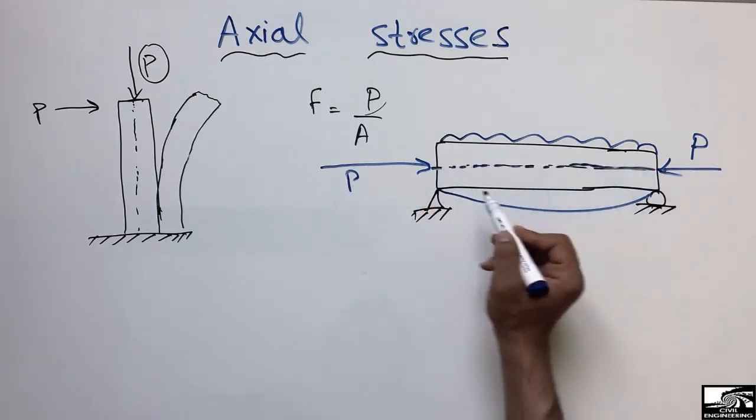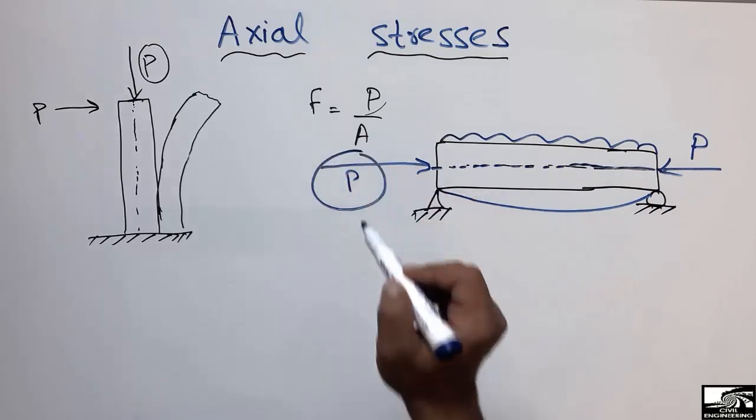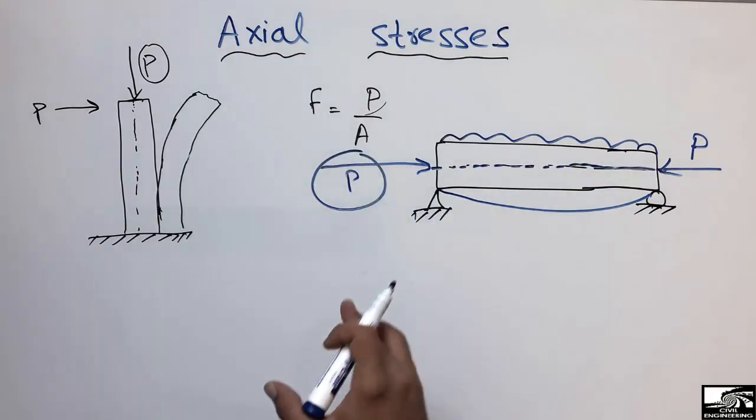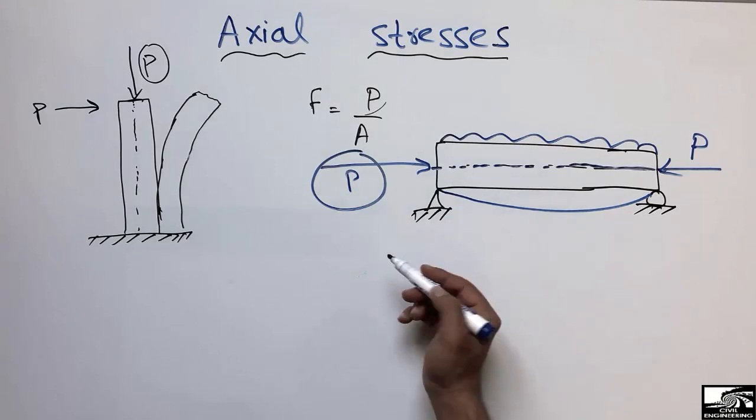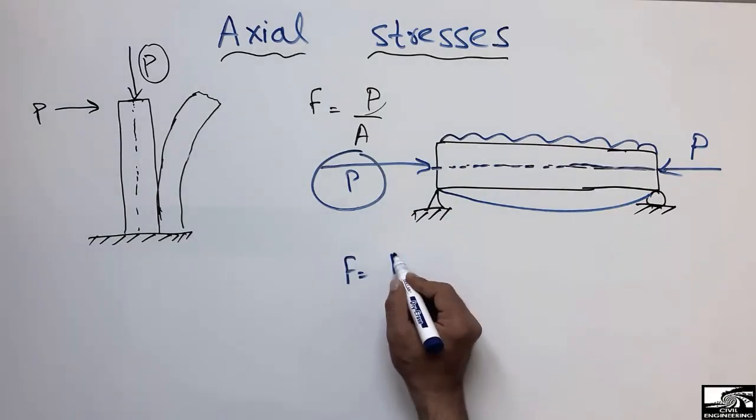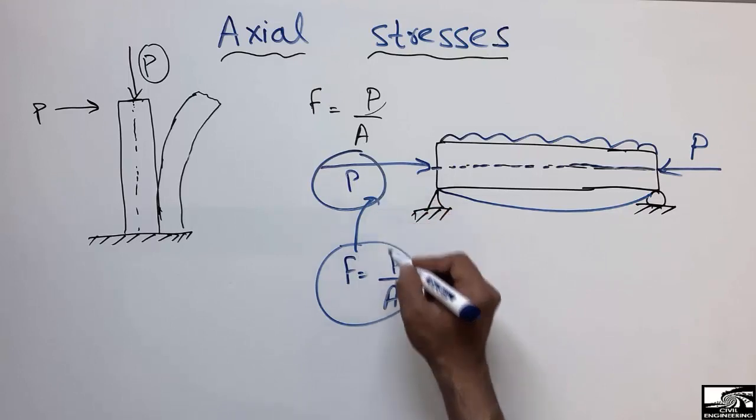So now this force will create stresses in the beam which are known as axial stresses. The formula is simply P over A, similar to axial stresses in the beam.